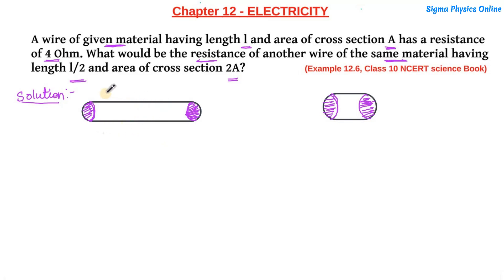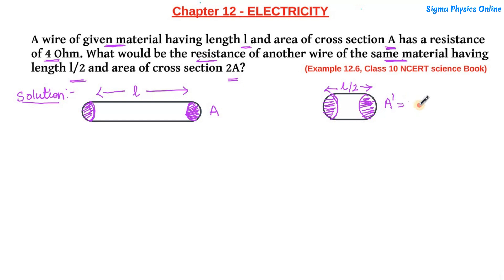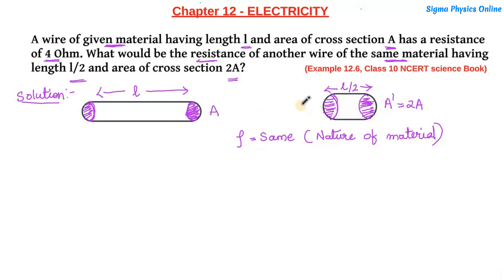Here are the two wires. The length of the first wire is l and its area of cross section is a. The second wire, made of the same material, has a new length l' = l/2 and a new area a' = 2a — double that of the previous wire. Now, the resistivity for both wires remains the same because resistivity depends upon the nature of material, and the material is the same for both wires.